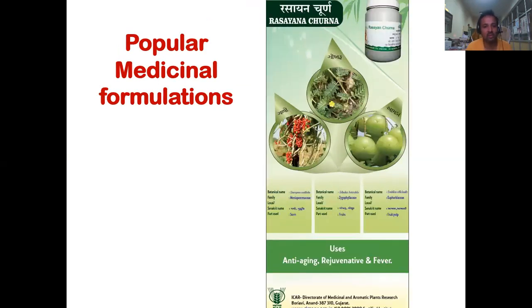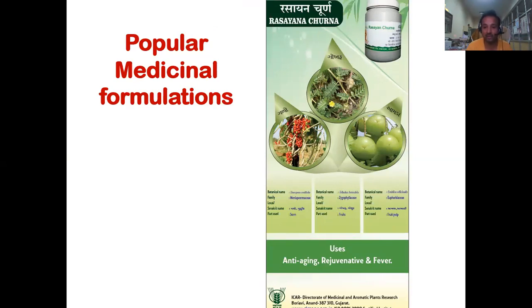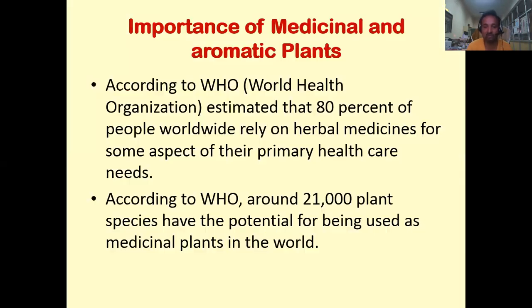Other popular medicinal formulations include Rasayana churna, which is made up of Guduchi (Giloy), Tribulus terrestris fruits and Amla fruits. It is extensively used as an anti-aging and rejuvenative agent, and also has antipyretic properties, which means it works against fever.